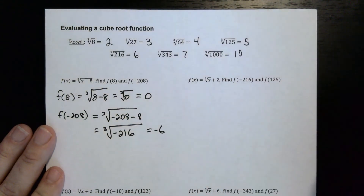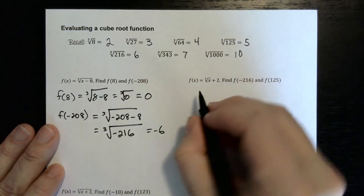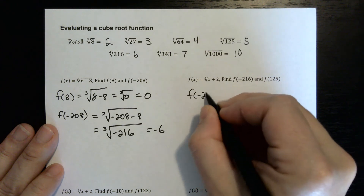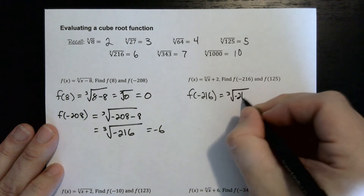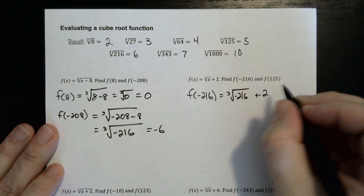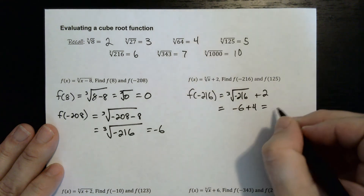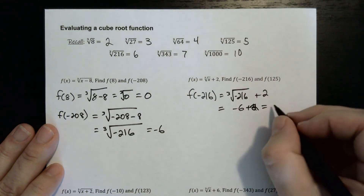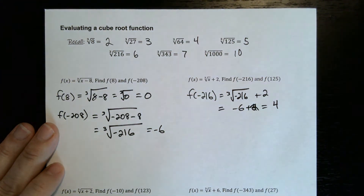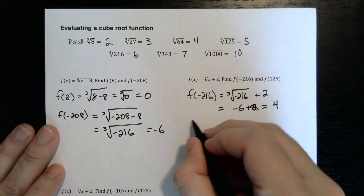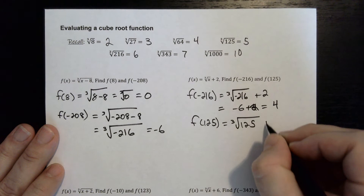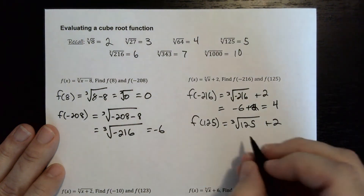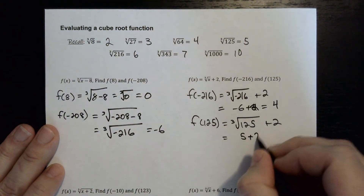For f of x equals the cube root of x plus 2, where the 2 is outside the cube root: f of negative 216 equals the cube root of negative 216 plus 2, which is negative 6 plus 2, equals negative 4. And f of 125 equals the cube root of 125 plus 2, which is 5 plus 2, equals 7.